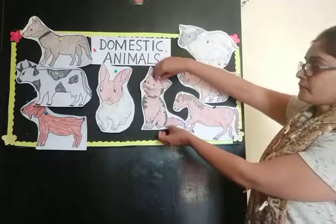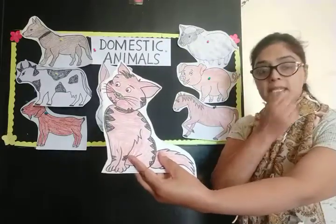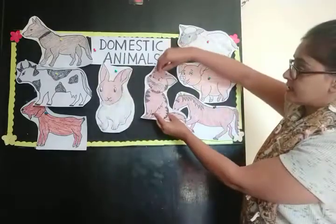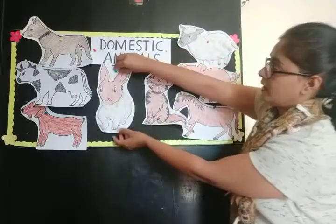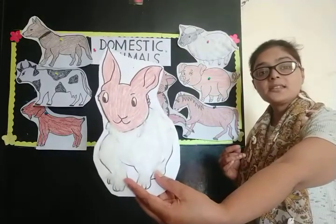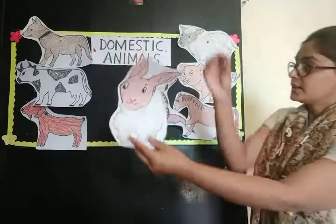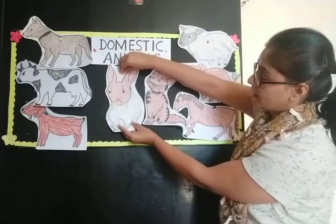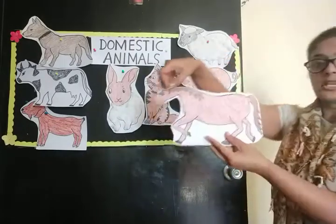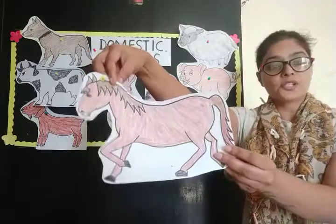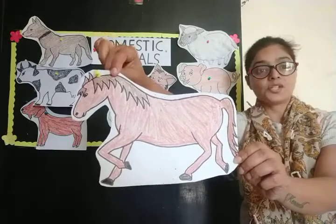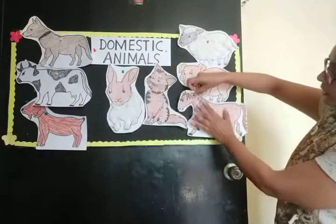So children, all of you know it's a cat. Which animal is this children? It's a cat. Yes. And now tell me children, which domestic animal is this? It's a rabbit. And now can you tell me its name, children? Which domestic animal is this? It's a horse. Yes children, it's a horse.